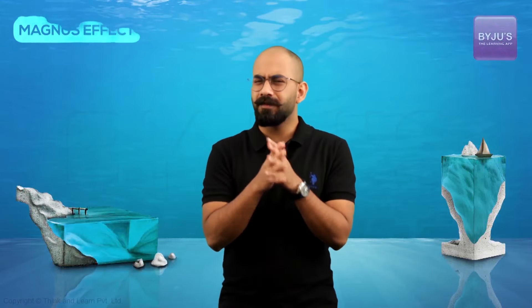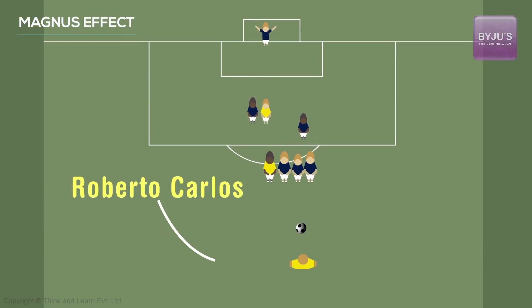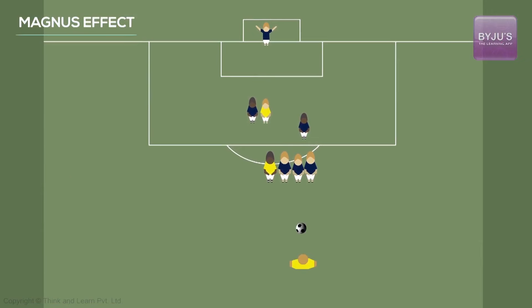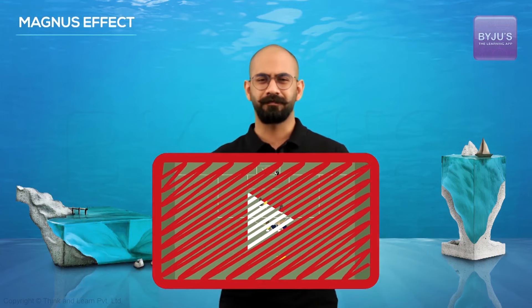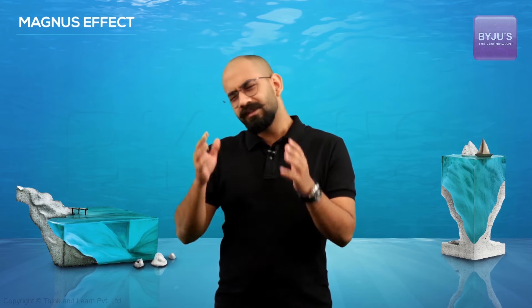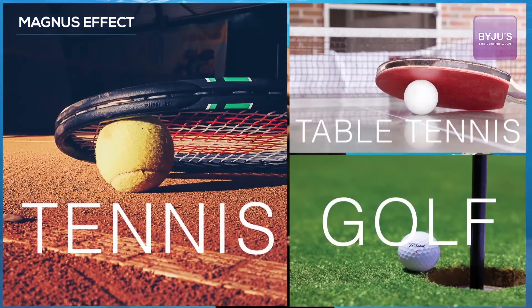Have you ever watched the extremely famous video of footballer Roberto Carlos where he kicks a free kick and the ball actually curves around a wall of defenders? If not, you should — you can check it out on YouTube. In fact, many footballers use exactly the same technique. This technique is also used in other ball sports like tennis, table tennis, golf, etc. So, how does this work?